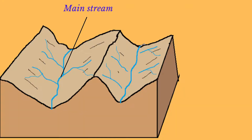The main stream in a drainage basin is the largest one found at the center of the drainage basin, and all other streams flow into the main stream. The main stream is also responsible for taking the water that flows into it to the mouth of the river where it ends, and in many cases the mouth of the river is at the sea.